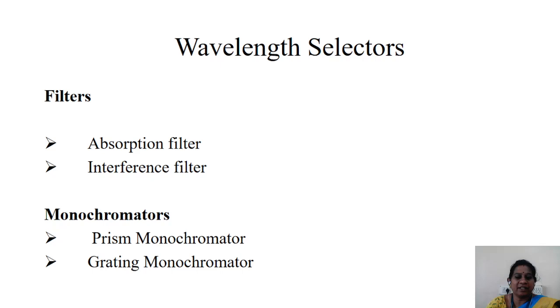So what are wavelength selectors? Wavelength selectors are devices which are used to select a particular wavelength, and when it comes to wavelength selectors you have two types: one is the filters and monochromators. Filters are used to remove the unwanted wavelength or allow only a particular wavelength to pass through.